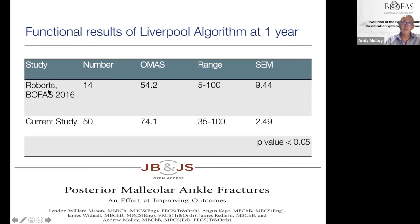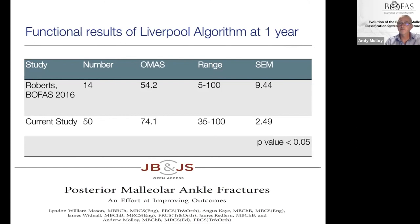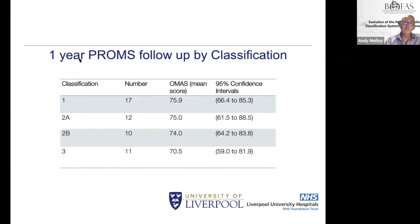Our results: the initial study with Leicester was presented at BOFAS in 2016 and published. Average OMAS scores in these posterior malleolar fractures were 54. With our treatment algorithm, this improved to 74 — now equivalent to a bimalleolar ankle fracture in outcomes. Split by subtype, types 1, 2a, and 2b are identical in outcomes; type 3, which involves true chondral injuries, is slightly worse, as one would expect.